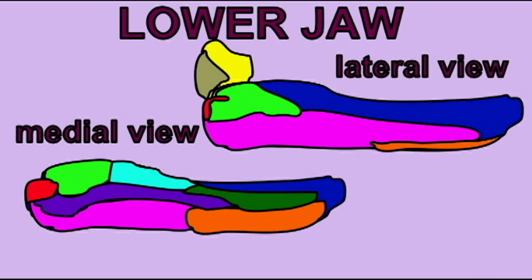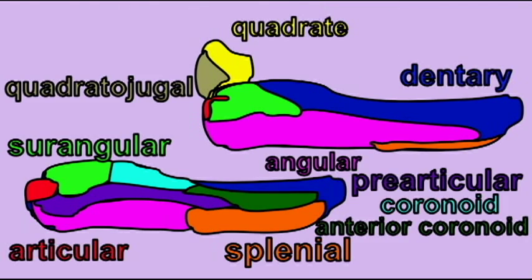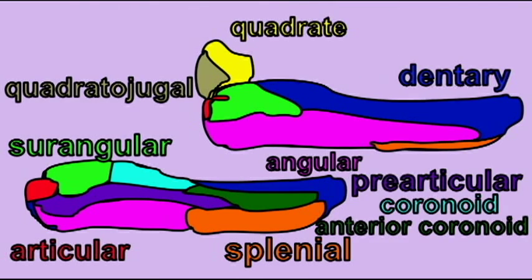But three are retained in mammals. Originally, there was a jaw joint between the bones here depicted in red and yellow, the quadrate and the articular.